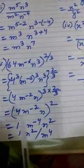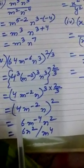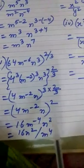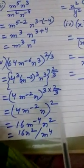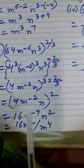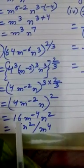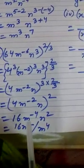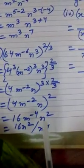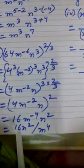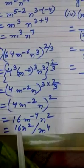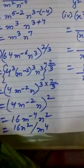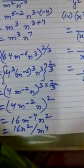The 3 will be cancelled out. We have m to the power minus 2, n, whole power 2. Then multiply the power — we will have 4 squared equals 16, m to the power 4, n squared. So we will get the answer as 16 n squared by m to the power 4.